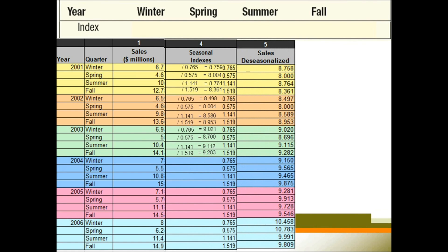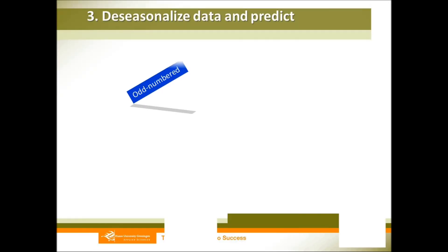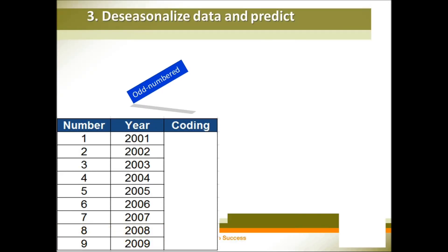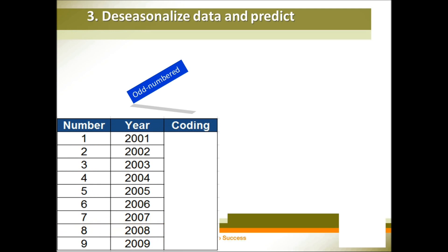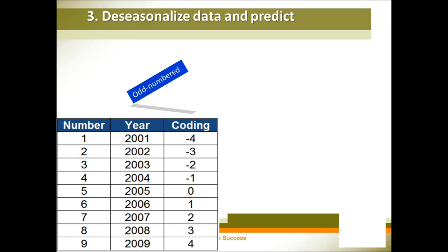The de-seasonalized data is your y variable — the dependent variable — and time is the independent variable. Before regression analysis, we need to learn how to code time. If we have an odd number of years, for example nine years, the middle year is coded as zero, then minus 1, minus 2, plus 1, plus 2, and so on. If it is even-numbered — say 10 years — then we use the middle two as minus 1 and plus 1, then minus 3, plus 3, minus 5, plus 5, et cetera.